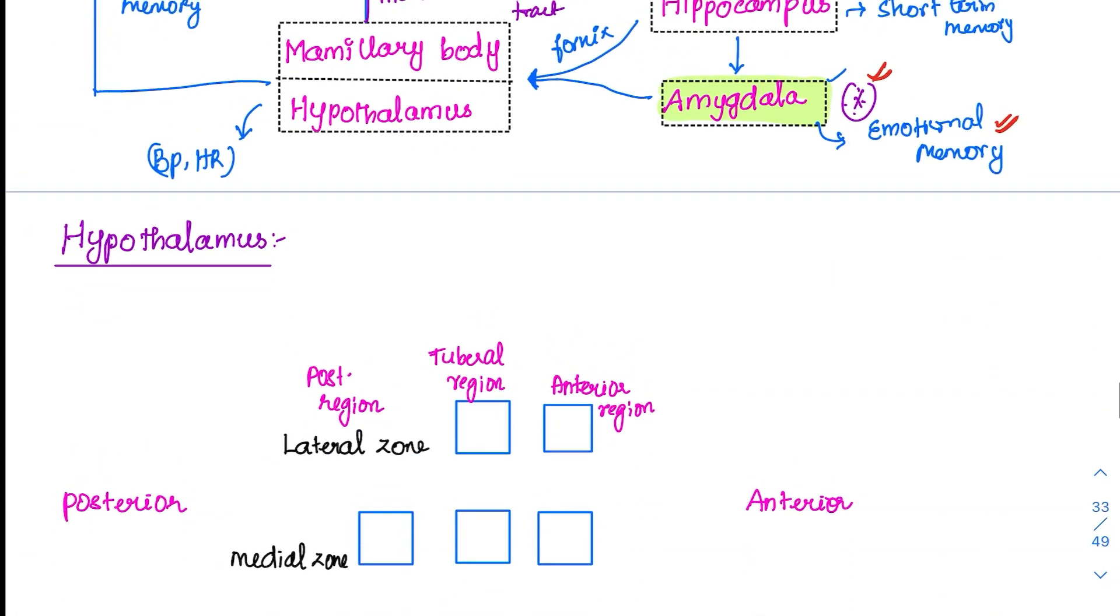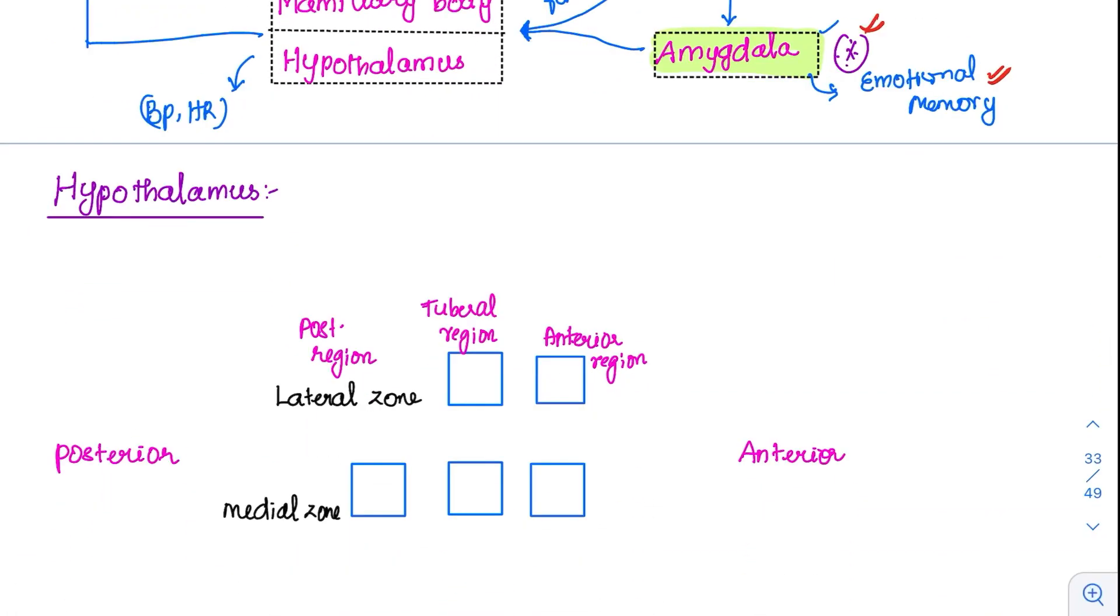Next coming to the hypothalamus. Hypothalamus has numerous nuclei but we will try to remember the function of very specific nuclei only. Hypothalamus has both endocrine functions as well as other functions. It is basically divided into anterior and posterior side.